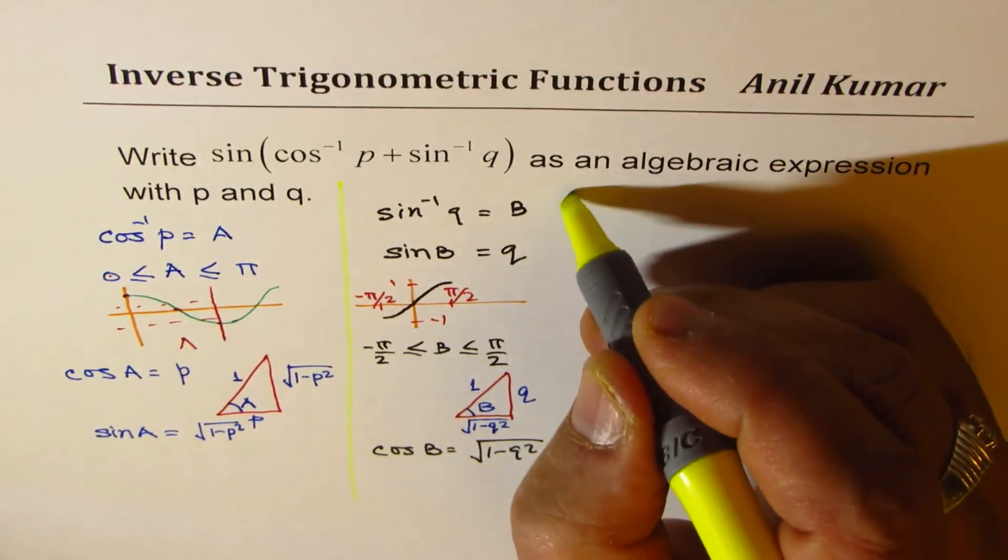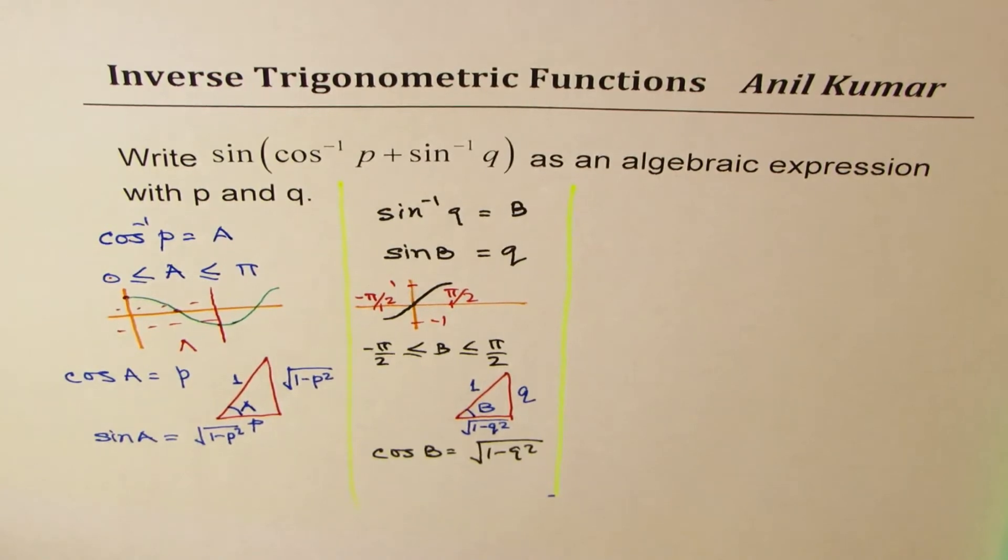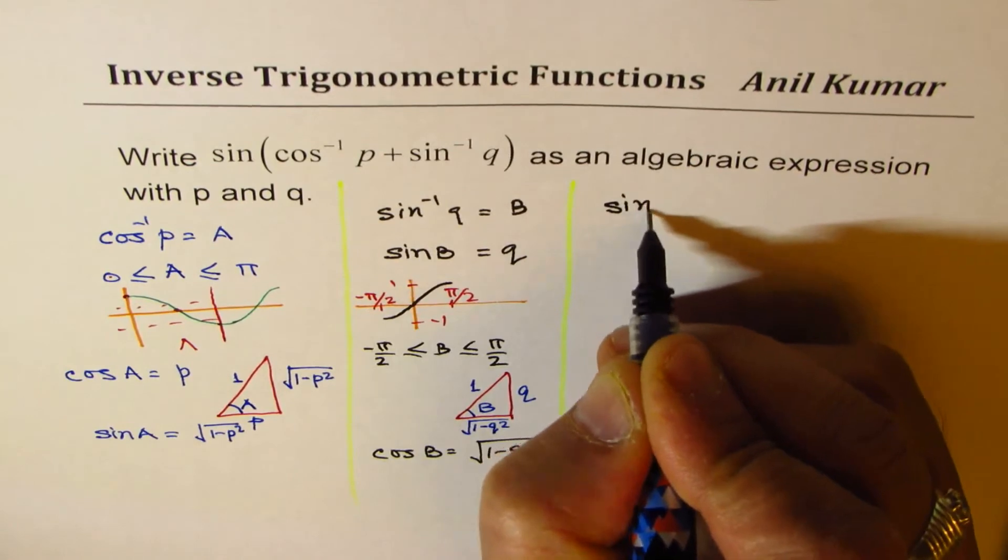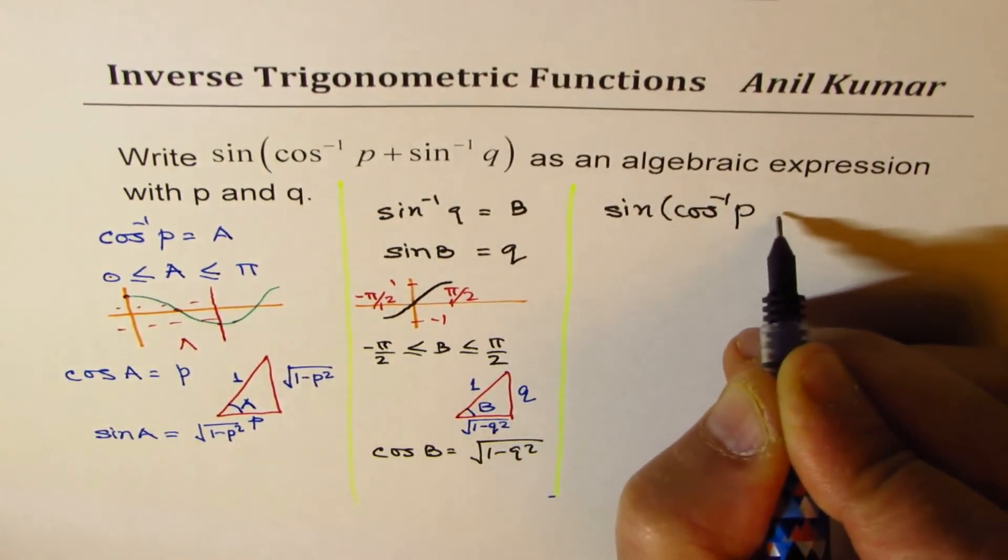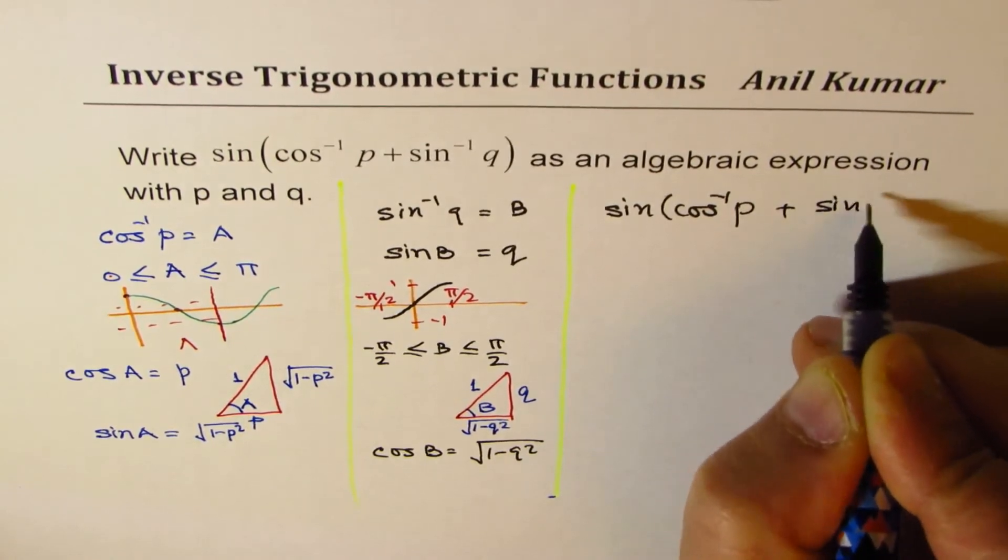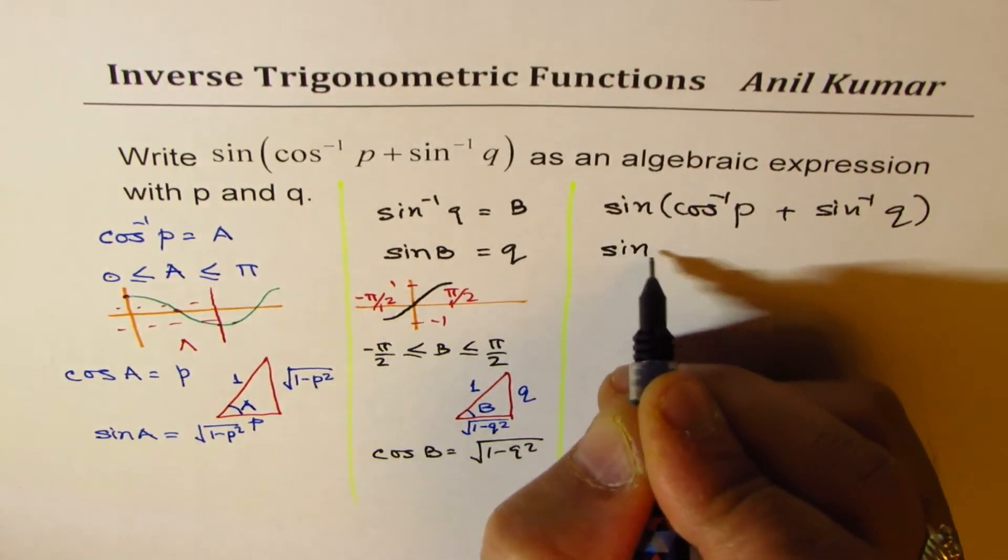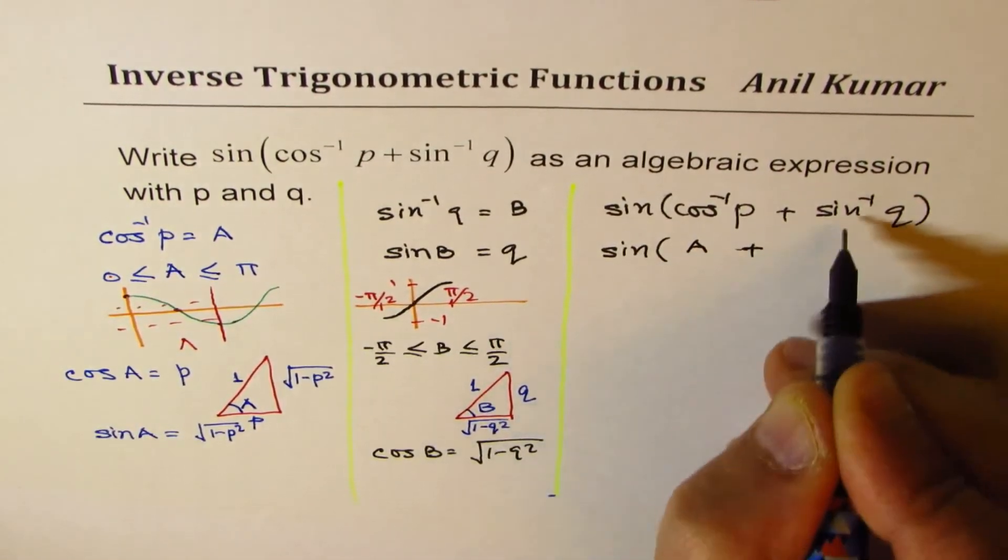When we know both values of sin A, cos B, cos A, sin B, we can find what this is. What we are trying to find? Sin of cos⁻¹p plus sin⁻¹q. That is, sin of (A + B).